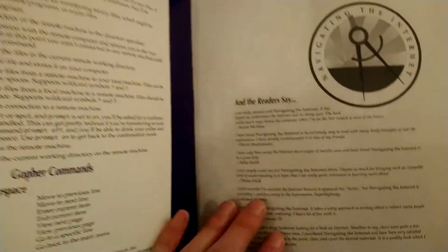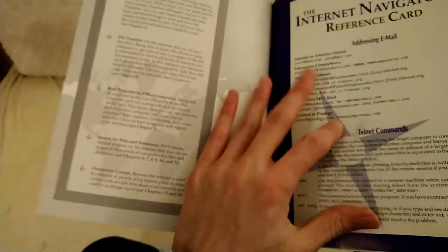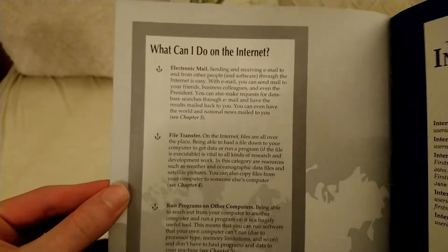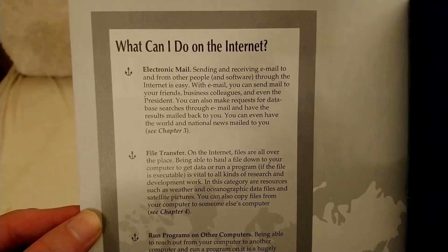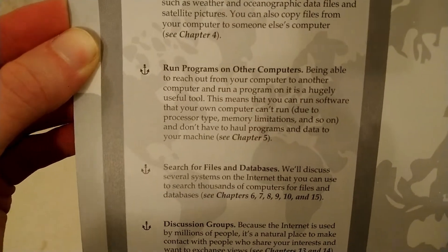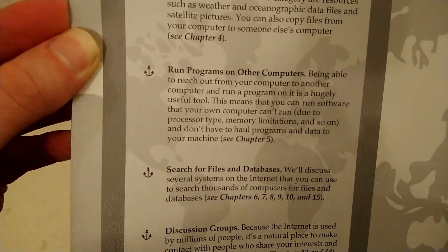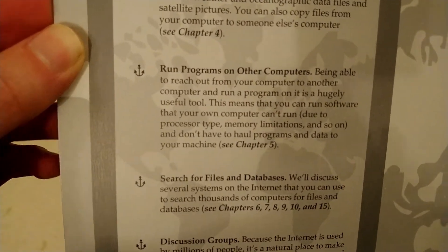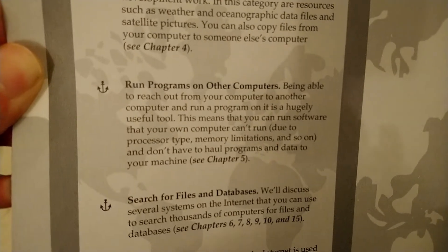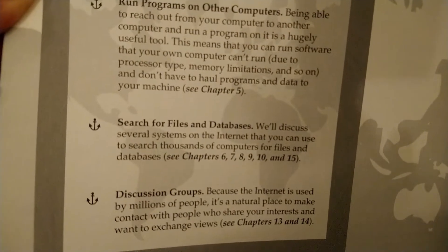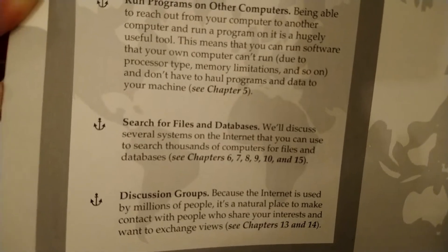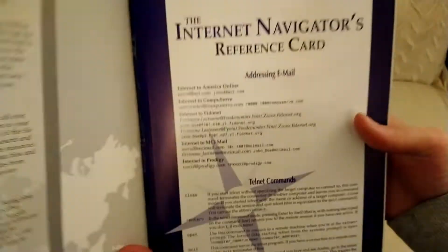Alright, so let's look through the book. First page — we gotta start at the beginning. 'What can you do on the internet?' Electronic mail. Run programs on other computers — that's actually pretty huge, still. Search for files, and discuss. Contact people who share your interests and want to exchange views. I mean, I guess that's what's happening right now, if you're watching.